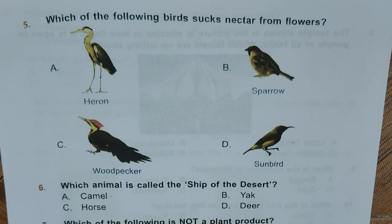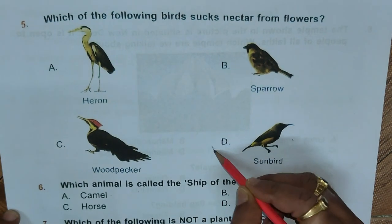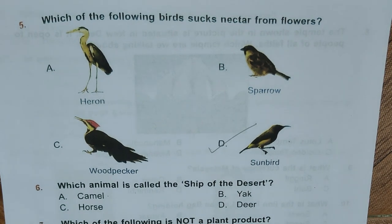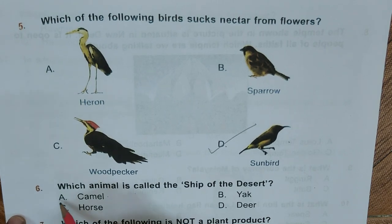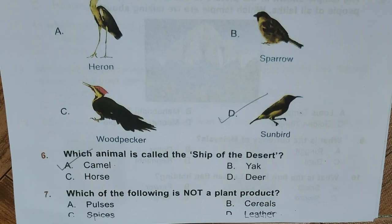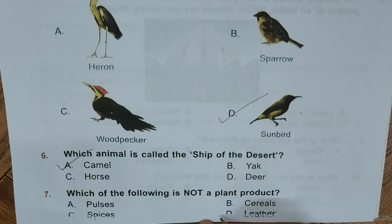Question 5: Which of the following birds sucks nectar from flowers? A. Heron, B. Sparrow, C. Woodpecker, D. Sunbird. Correct answer is D, Sunbird. Question 6: Which animal is called the ship of the desert? A. Camel, B. Yak, C. Horse, D. Deer. Correct answer is A, Camel. Question 7: Which of the following is not a plant product? A. Pulses, B. Cereals, C. Spices, D. Leather. Answer is D, Leather.